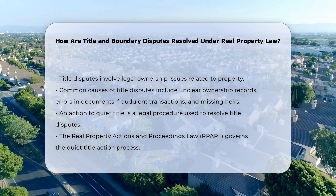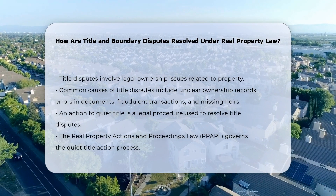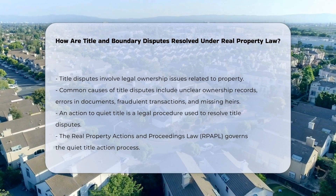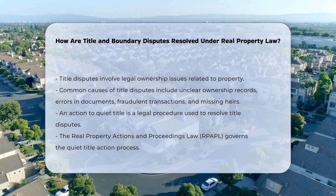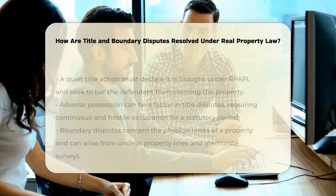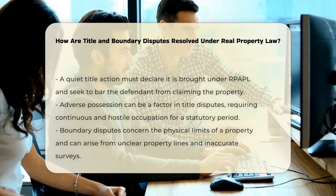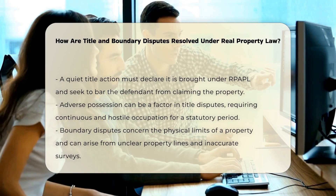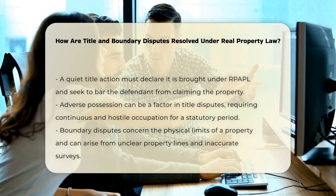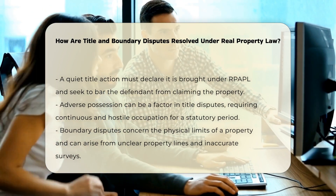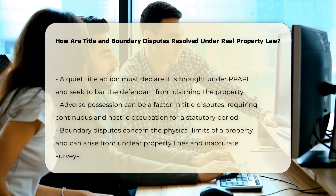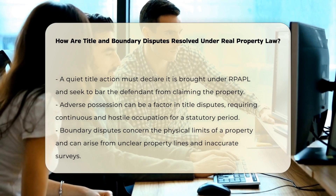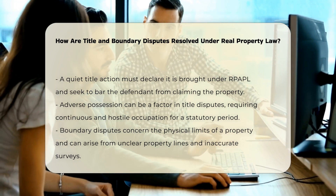The Real Property Actions and Proceedings Law, RPAPL, outlines that such an action must include a statement that the action is being brought pursuant to RPAPL, and the demand for judgment should seek to bar the defendant and anyone claiming under them from any claim to the property. In cases of title disputes, the court may also consider issues like adverse possession, where a person claims ownership of a property by continuously occupying it in a manner that is hostile, actual, open, notorious, exclusive, and continuous for a statutory period — typically 10 years in New York.